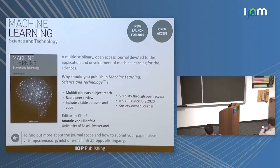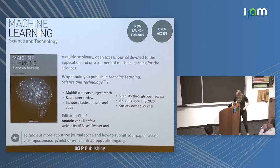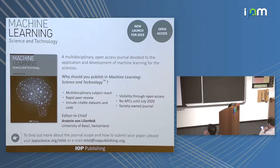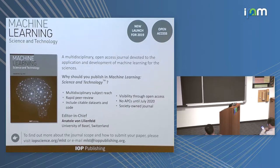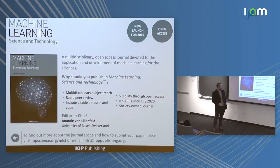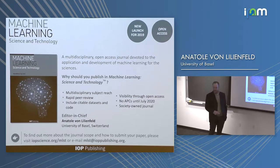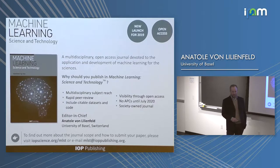Before I jump into things, we actually have a new journal. The Institute of Physics in the UK decided this was a good idea. It was started this year, it's open access, and if you think you have a machine learning paper that represents a technological advance relevant to multiple communities or different domains, please consider this journal.